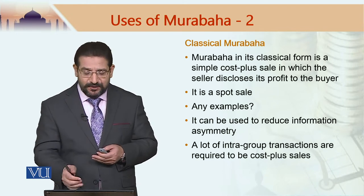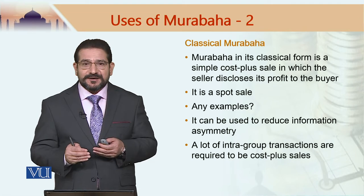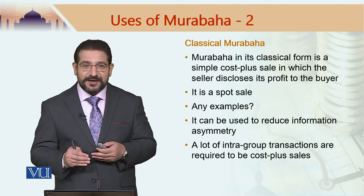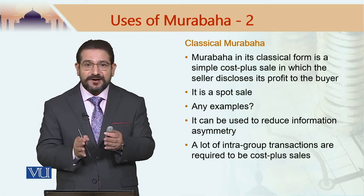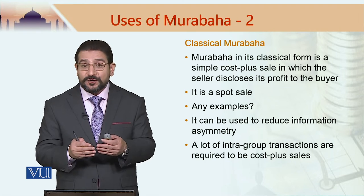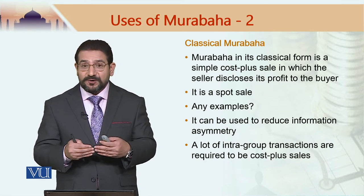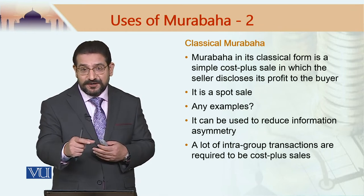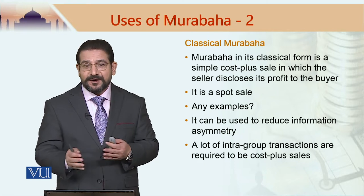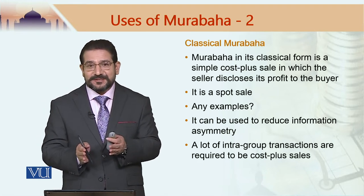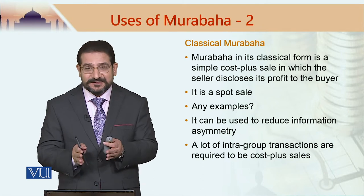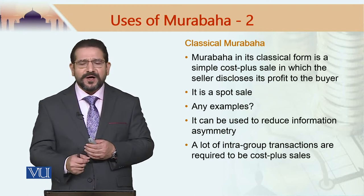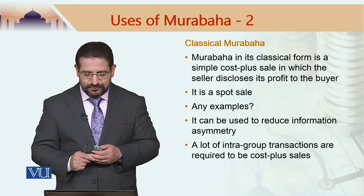In economics, we call it information asymmetry. Murabaha actually allows the buyer and the seller to reduce information asymmetry. The seller knows a lot more than the buyer, so this information asymmetry is there. The contract of murabaha makes this information asymmetry less, which is efficiency enhancing. This is one classical example of the use of murabaha.